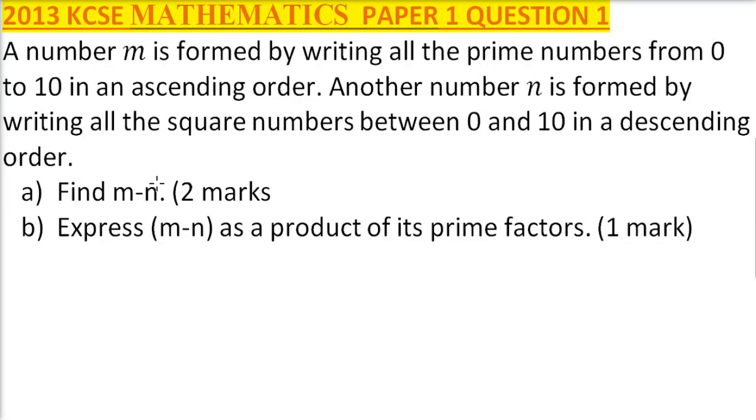2013 KCSE Mathematics Paper 1, Question 1. We are told a number m is formed by writing all the prime numbers from 0 to 10 in ascending order. Another number n is formed by writing all the square numbers between 0 and 10 in descending order. Find m minus n.